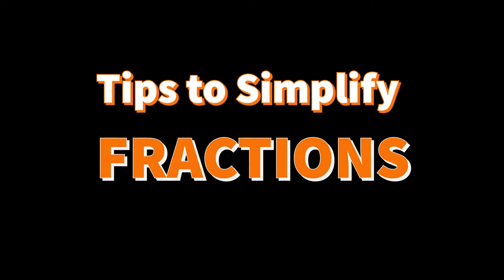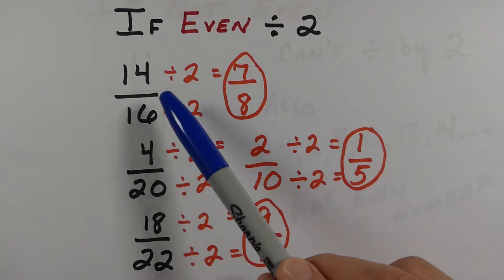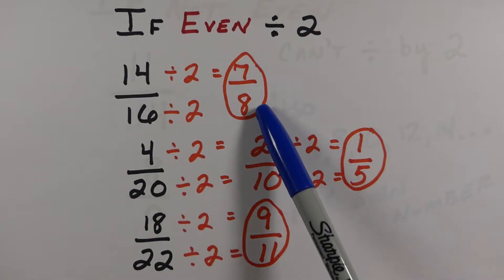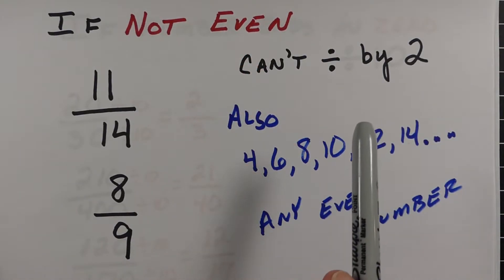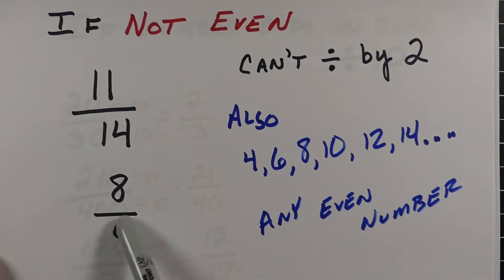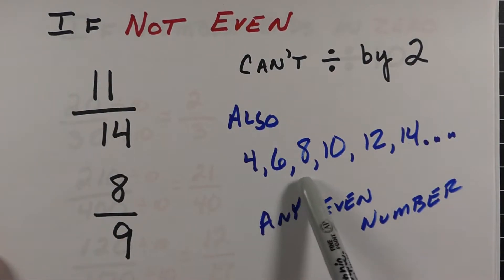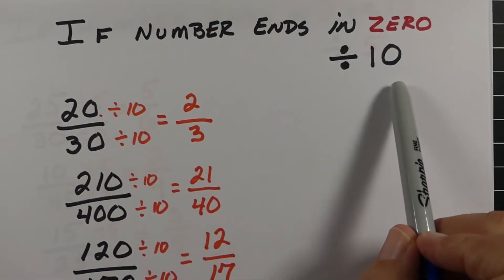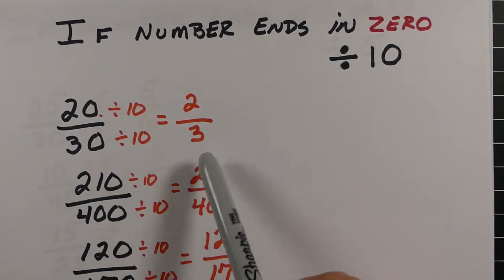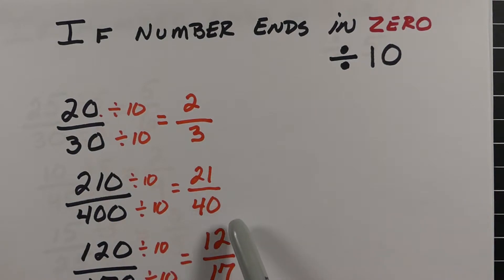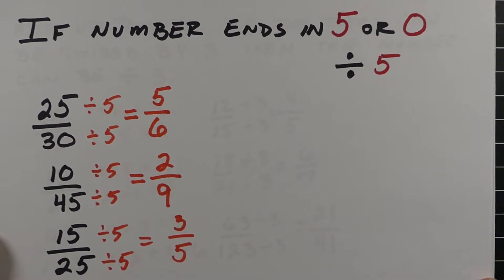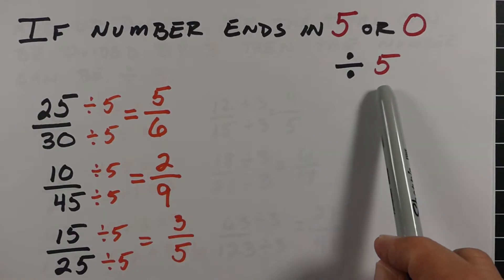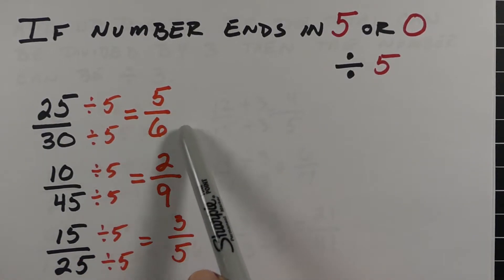Here are some tips to help you with simplifying fractions. You're trying to find a number that will divide into both. If both numbers are even, you know you can divide by 2 — so if the numerator and denominator are both even, just divide by 2. If one or both are odd, you know 2 won't work, and any even number won't work either. If both the numerator and denominator end in 0, you know 10 will divide into those — though a larger number like 20 might also work.